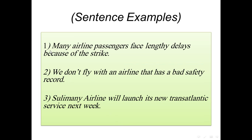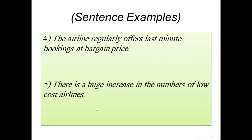Sentence examples: Number one — many airline passengers face lengthy delays because of the strike. Number two — we do not fly with an airline that has a bad safety record. Number three — Sulaimani airline will launch its new transatlantic service next week. Number four — the airline regularly offers last-minute bookings at a bargain price. Number five — there is a huge increase in the number of low-cost airlines.